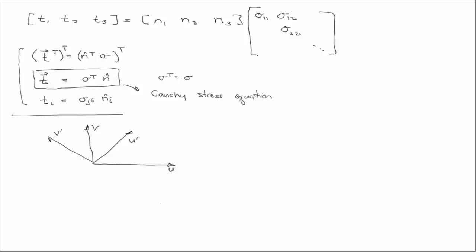We defined a rotation matrix, right? So u prime is equal to R u, and likewise v prime is equal to R v. Well, now we want to take a look at how tensors transform.